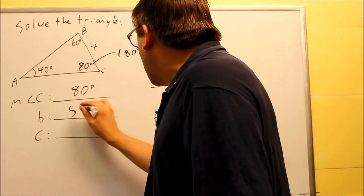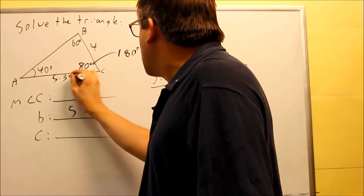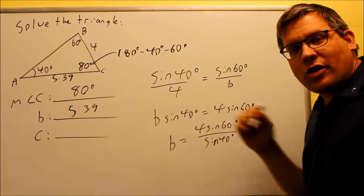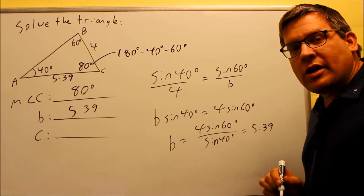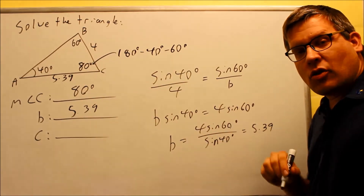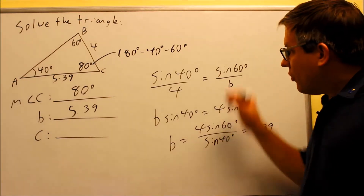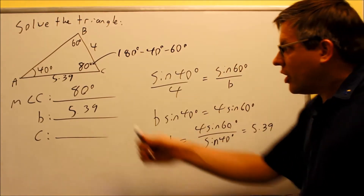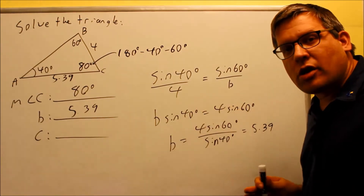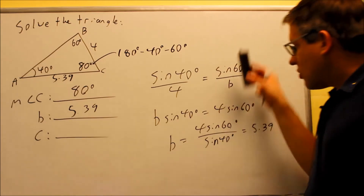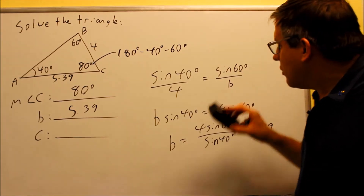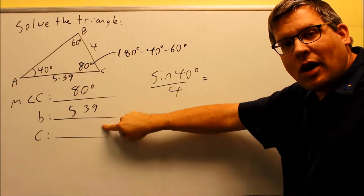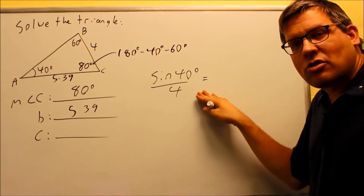So side B equals 5.39. A common mistake is students try to use the Pythagorean theorem to find the third side — you definitely can't do that here because this is not a right triangle. The Pythagorean theorem only works with right triangles. So we need to do another Law of Sines to get side C. We start again with the same known ratio: sine 40 over 4.